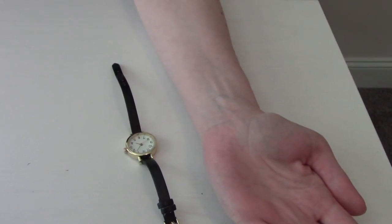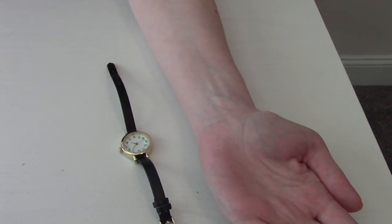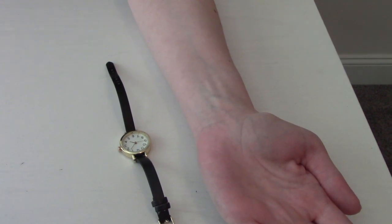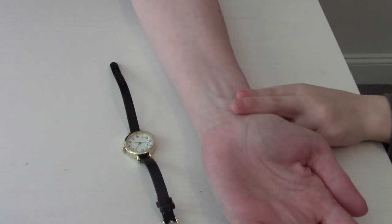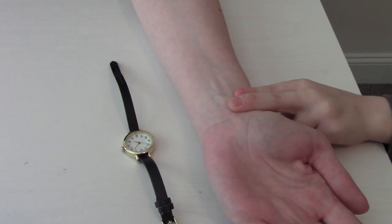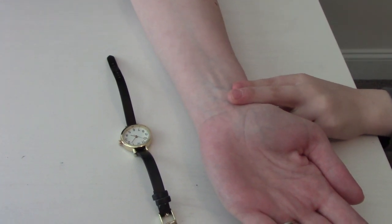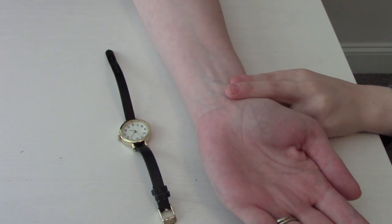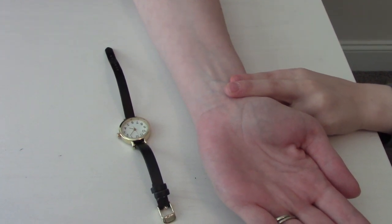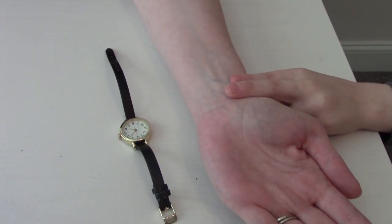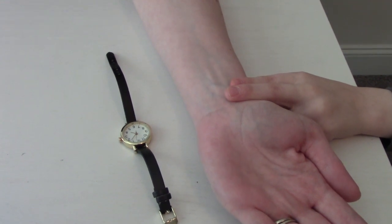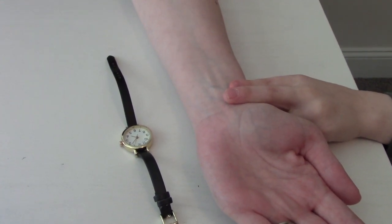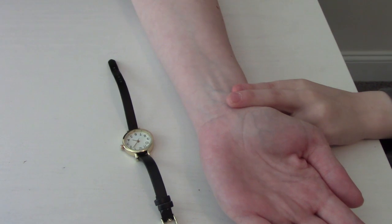To take somebody's radial pulse, you're going to see their thumb and then put two fingers slightly below onto the wrist. You're going to palpate for 30 seconds and then double that. So for example, if you palpate and you get 32, you're going to double that to 64 and their pulse will be 64. If there's any irregularities at all, you want to palpate for a full minute.